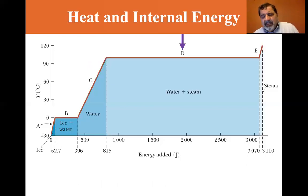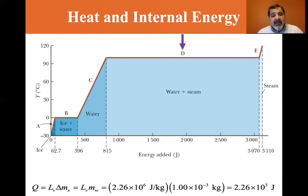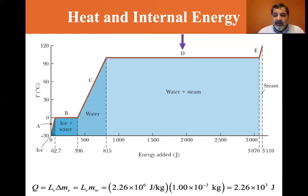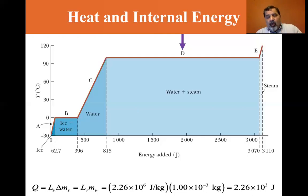Now we apply the latent heat of vaporization. Q = L_v · Δm_steam = L_v × mass of water = (2.26 × 10⁶ J/kg)(1 × 10⁻³ kg) = 2.26 × 10³ joules to vaporize the water and convert it to steam.